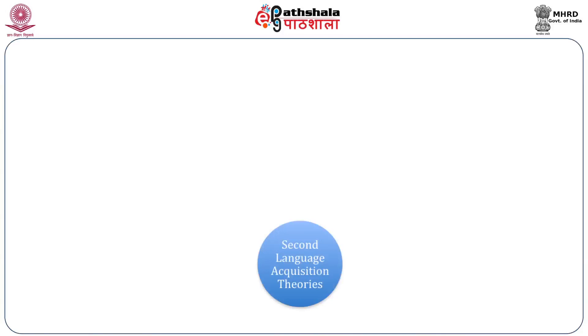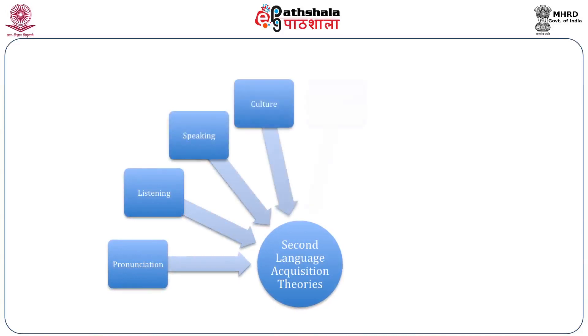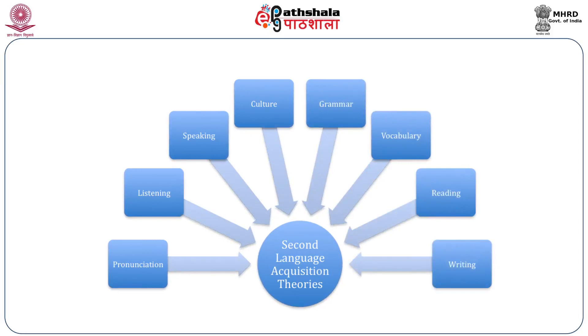Second language acquisition theories exist but are not the focus here. Instead, we are concerned with various factors visible in a diagram: pronunciation, listening, speaking, culture, grammar, vocabulary, reading, and writing — all of which are very important for English language learners and are shaped by the particular society in which they live.